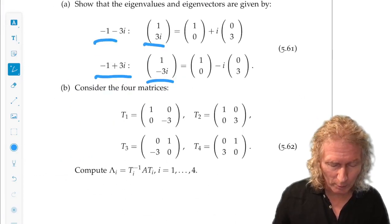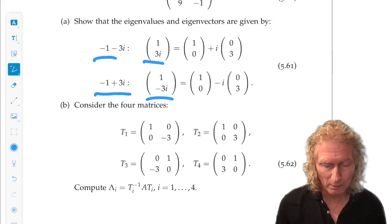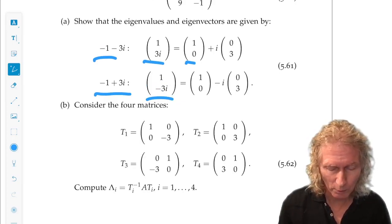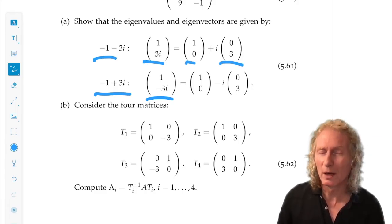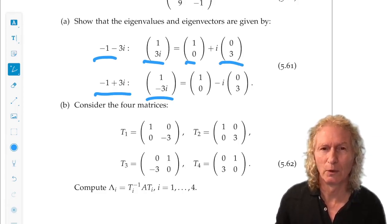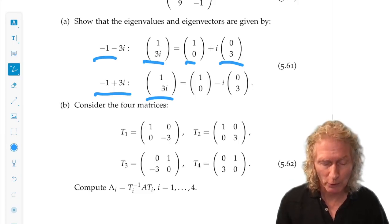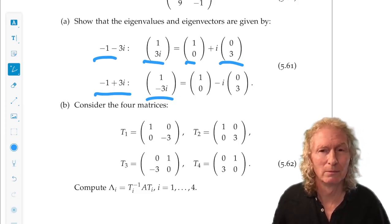Now I said to make the transformation matrix, you just take as one column the real part and the imaginary part of one of the eigenvalues. Does it matter which order they go in? No.